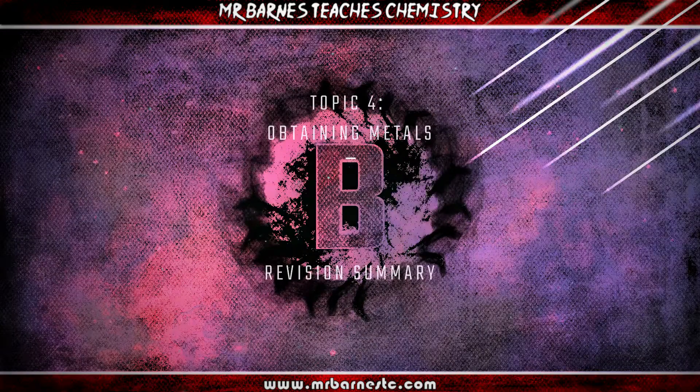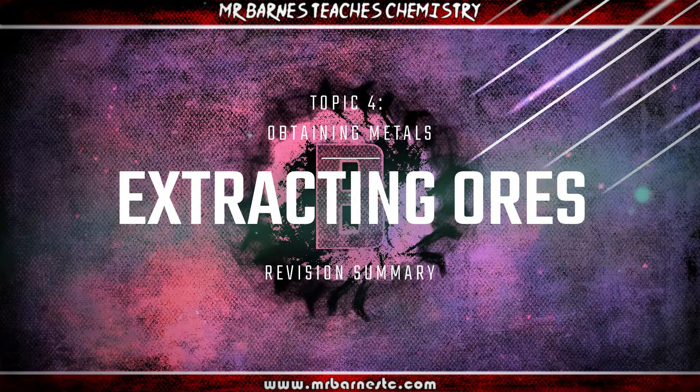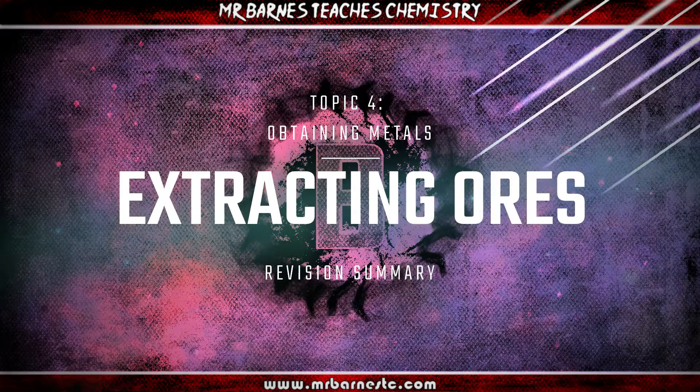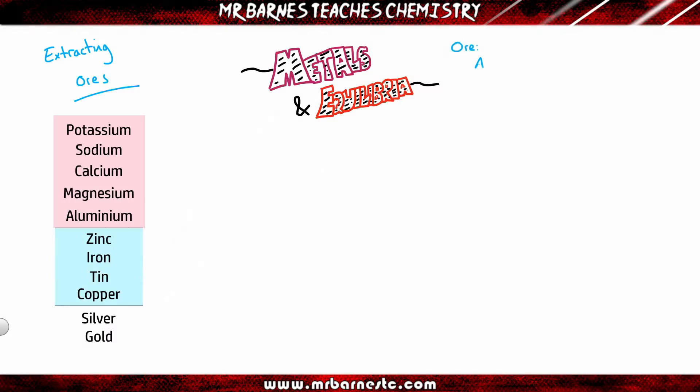Next section: extracting ores. What are ores and how can we extract metals from them? An ore is a rock that contains enough metal to make a profit when you extract it. You've got two types of ore: high grade, which means you'll get lots of profit, and low grade, you'll get little if any profit. We need to get those metals out of the ground, so how do we do it?